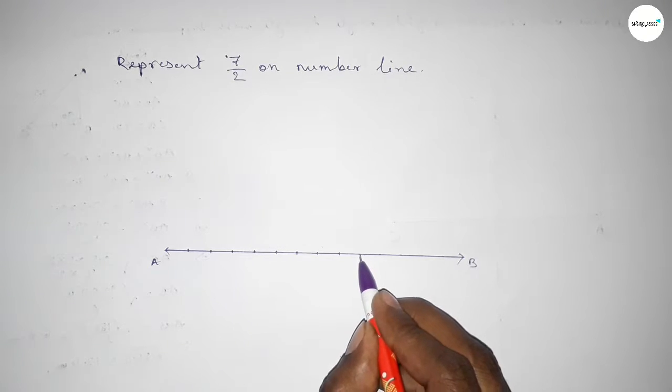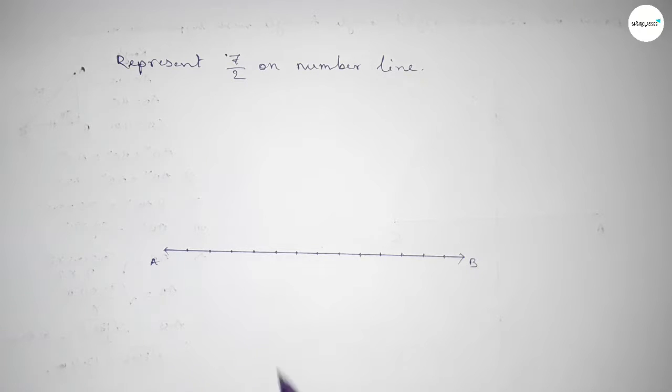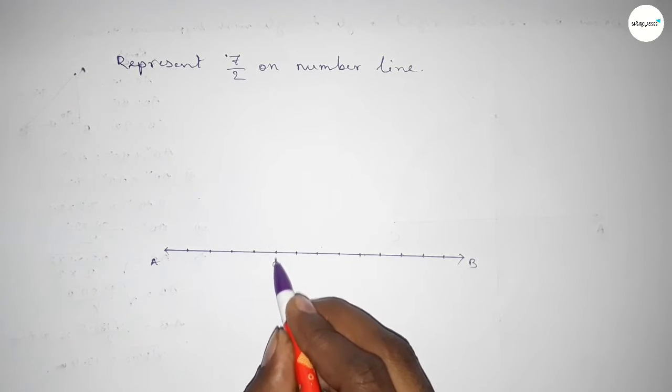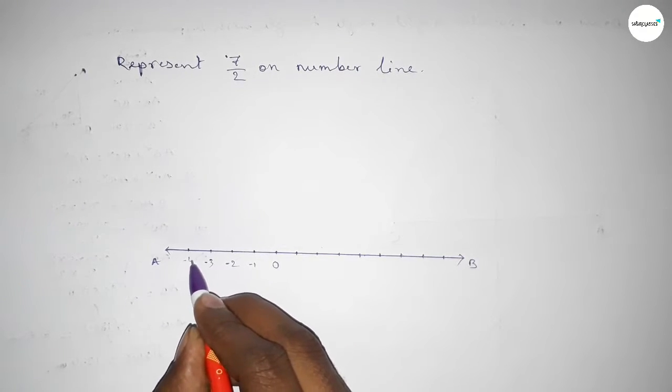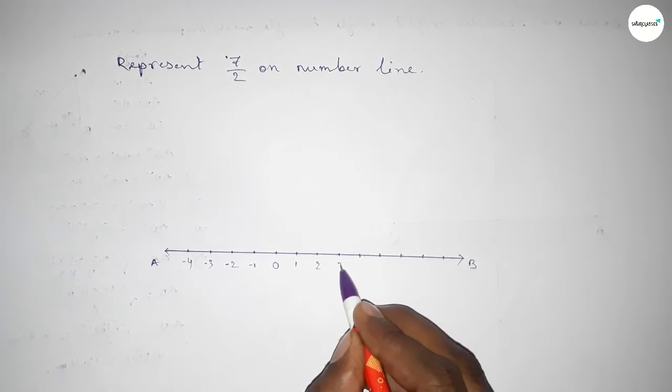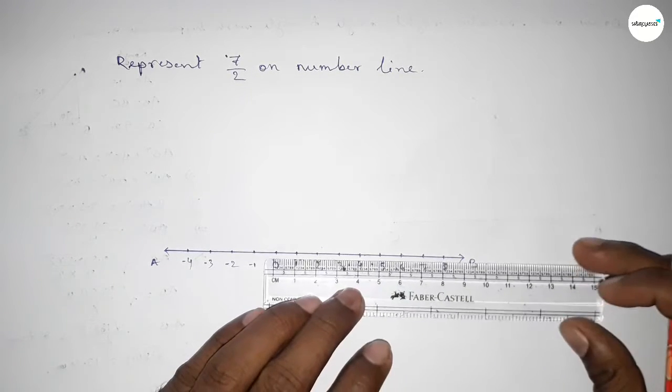Taking here starting number zero, and this side minus 1, minus 2, minus 3, minus 4, and this side plus 1, 2, 3, 4, 5, 6, 7, 8.